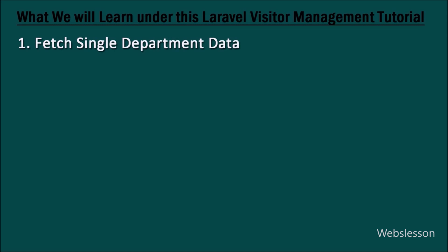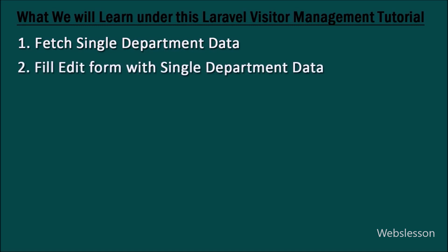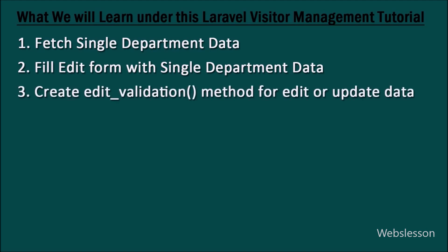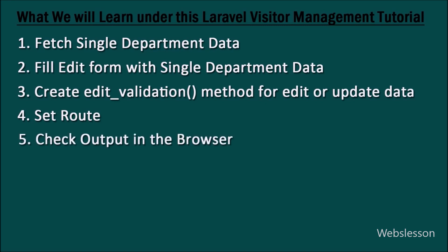First, we will create an edit method for loading the edit department form in the browser with filled form fields with single department data. After this, we will create the edit department form with display validation error. Next, we will create another method for handling department edit form data submit request. After this, we will set the route for the newly created department controller class methods. And lastly, we will check the edit department feature output in the browser.